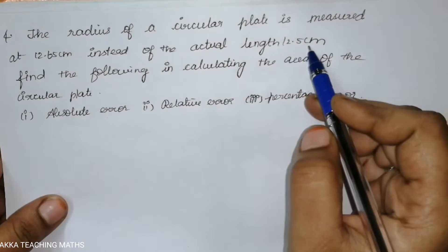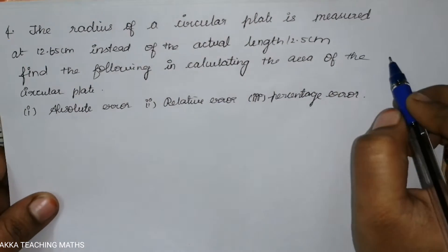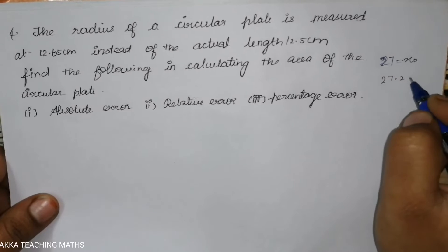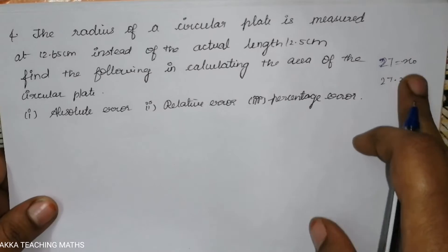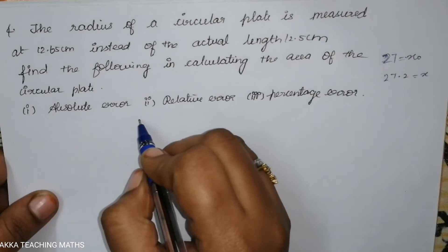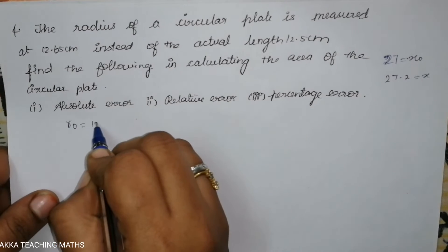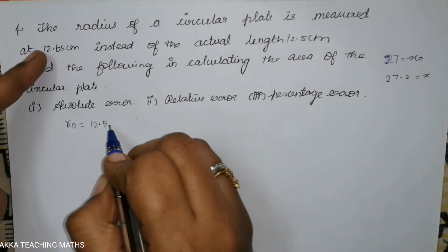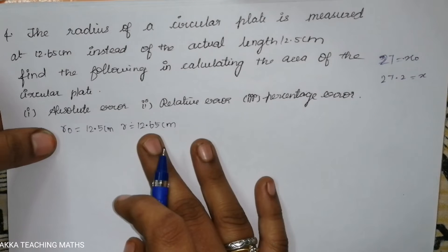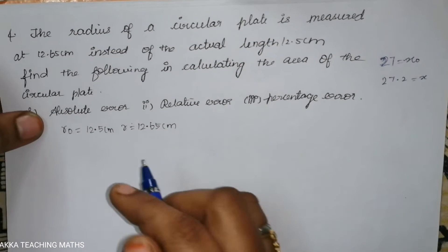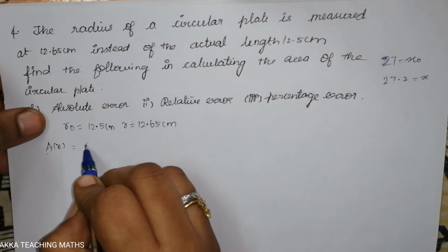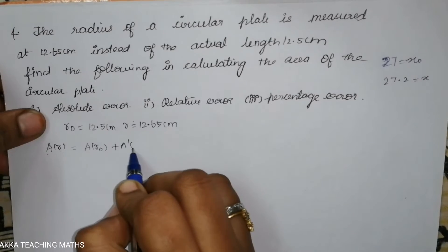The actual value is x0 and the error measurement is x. Here x0 is equal to r0, and r0 is equal to 12.5 cm. The measured radius r is equal to 12.65 cm. This is the formula for the linear approximation — A of r as a function of r.